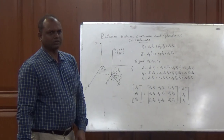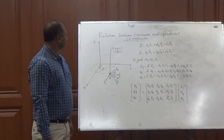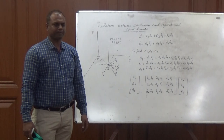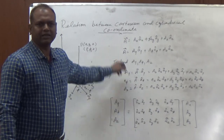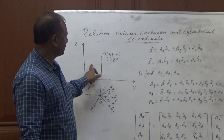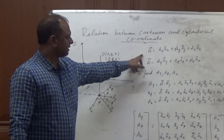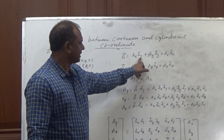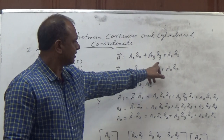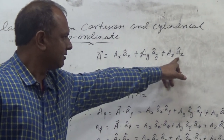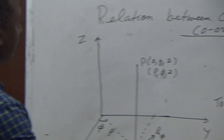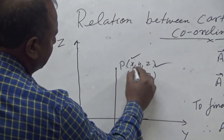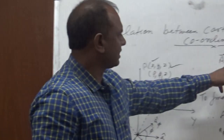Today I am going to discuss one topic from electromagnetic field theory, that is the relation between Cartesian and cylindrical coordinate systems. In Cartesian coordinate system, any point is represented by position vector A, with components AX, AY, and AZ, each with their respective unit vectors. These three unit vectors are perpendicular to each other.